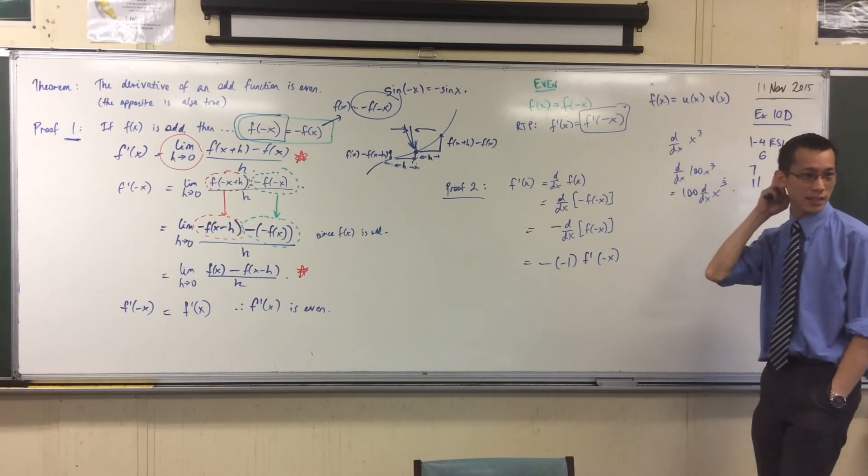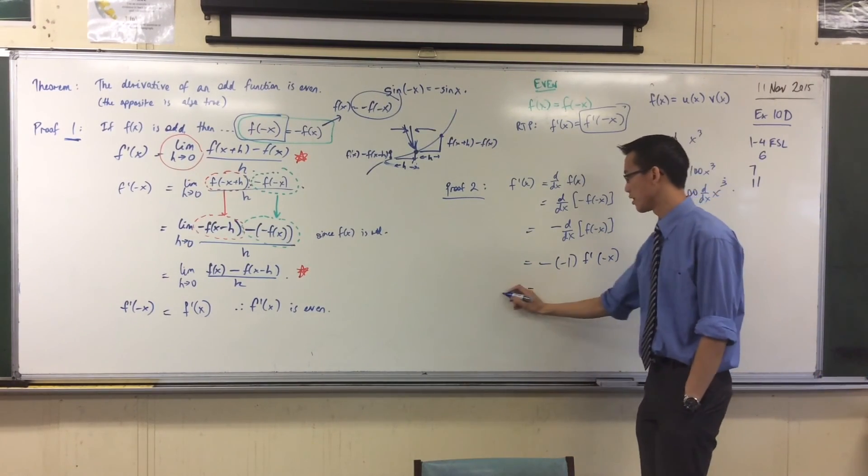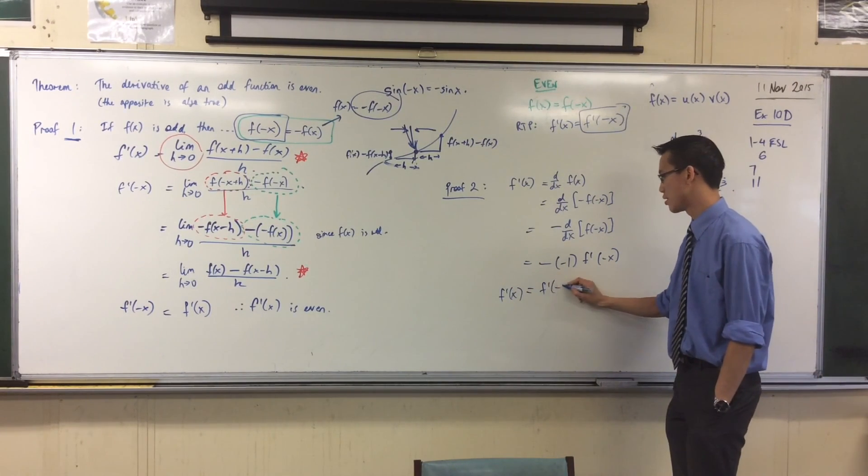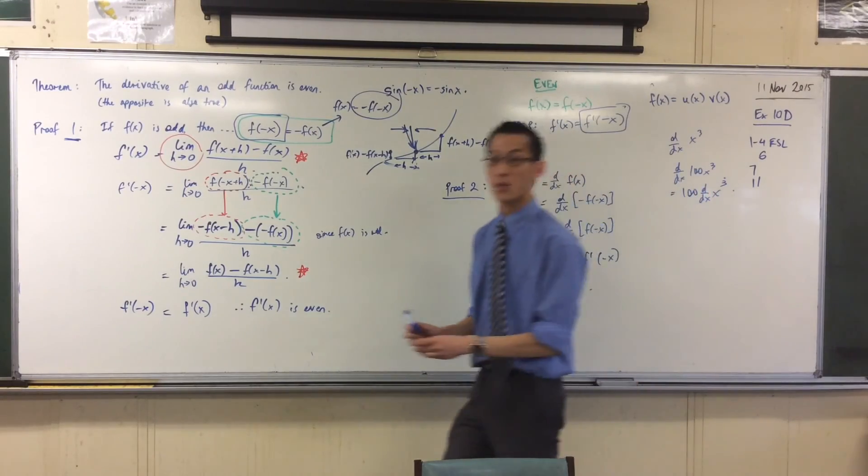Hold on, I have some negatives to cancel. What have I got on the left? I've got f dash. What have I got on the right? f dash negative x. The derivative is even.